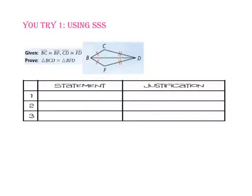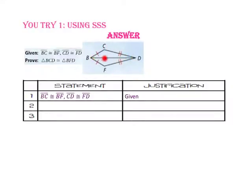Pause the video and do you try number one. Let's prove triangle BCD is congruent to triangle BFD using the side-side-side postulate. The given information tells us side BC is congruent to side BF and side CD is congruent to side FD. Since side BD is in both triangles, it is congruent to itself — side BD is congruent to side BD by the reflexive property of congruence. Therefore, triangle BCD is congruent to triangle BFD by the side-side-side postulate.